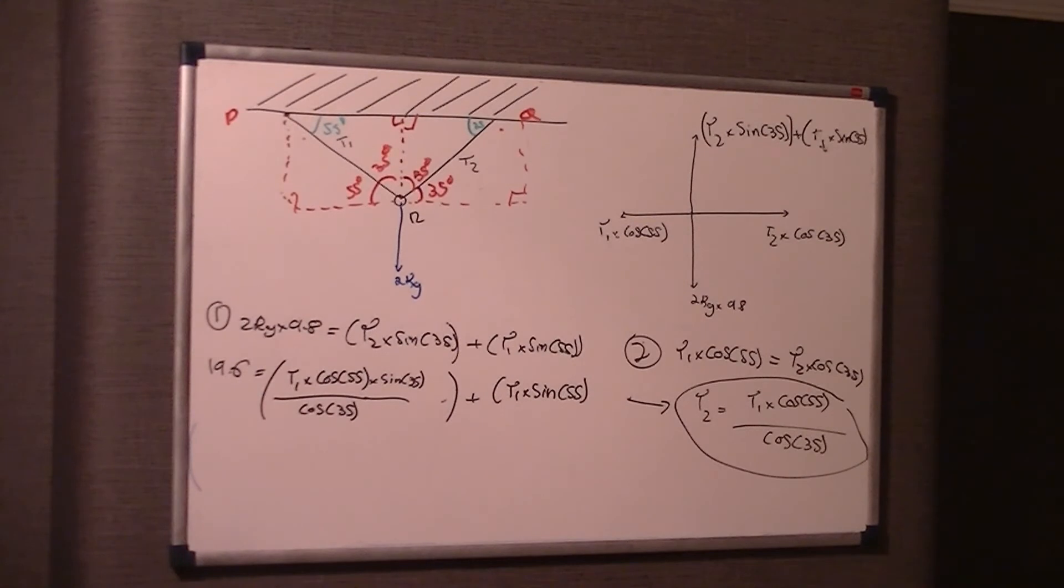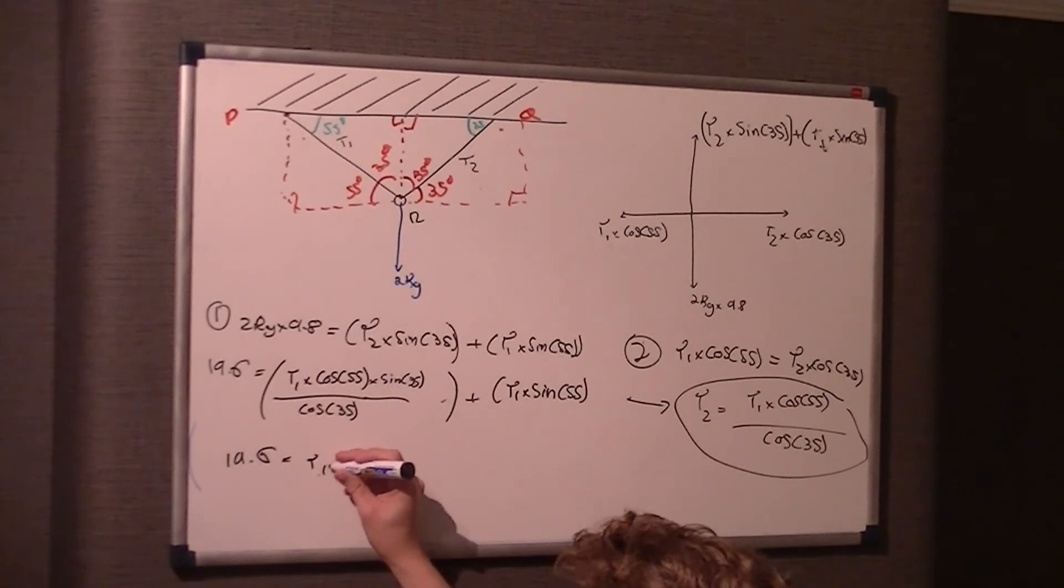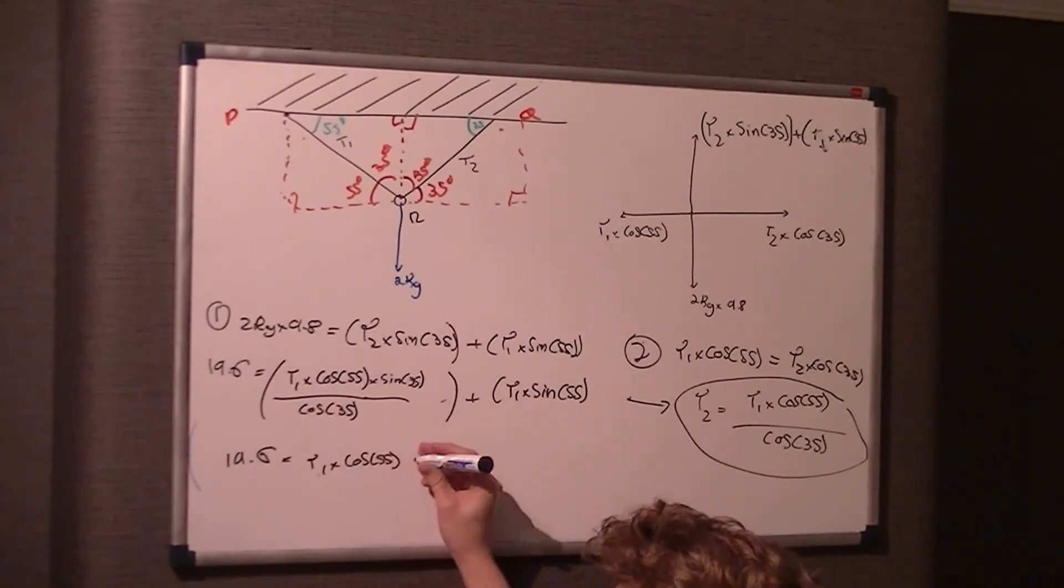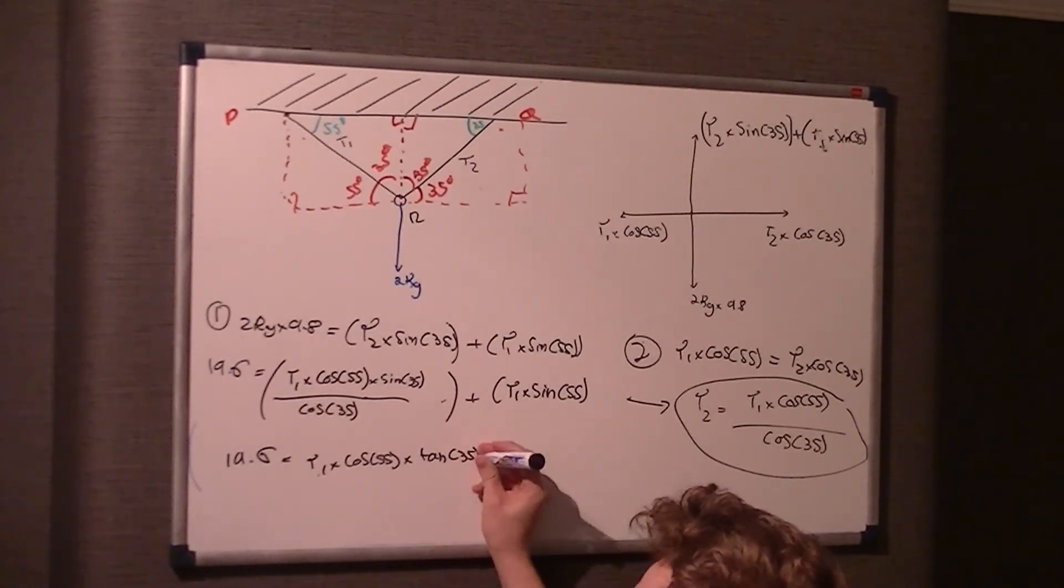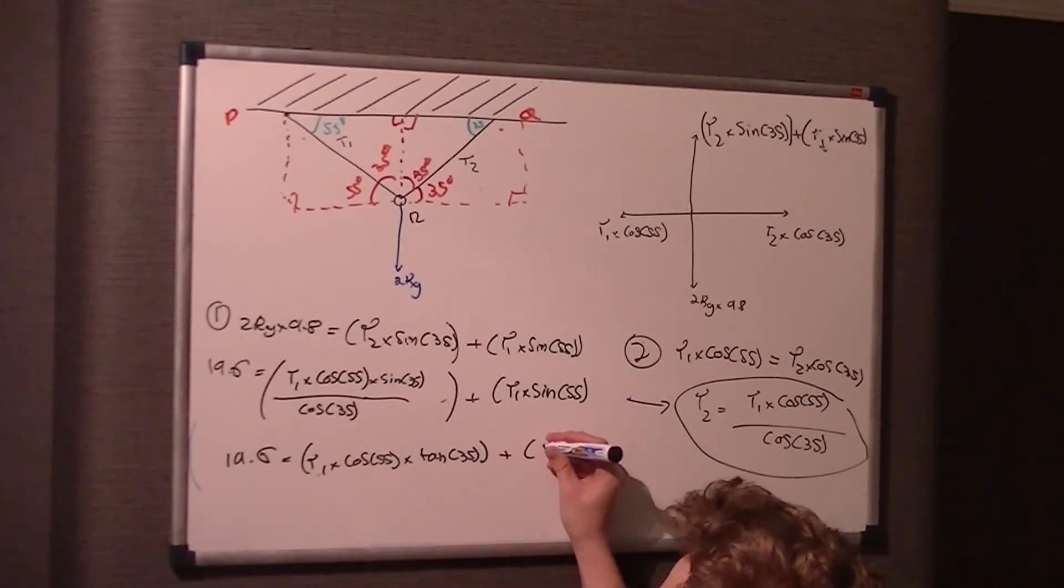So what you'll notice, you should remember an identity from C2, or C1 identity actually, I think, where sin over cos is tan. So sin over cos is tan. Now we can't do cos 55, cos 35 over cos 35, because they're totally different angles. But we're trying to do sin 35 over cos 35. Because the angle is the same, so it's a sin x. If you let x be 35 degrees, that'll be sin x over cos x, which is tan x. So that's tan 35 degrees. But we've still got this T1 times cos 55 business, which doesn't change. But we do get rid of this cos 35, if you can imagine. So what essentially happens is this becomes T1 times cos 55 times tan 35 plus T1 times sin 55.